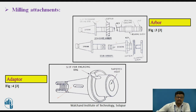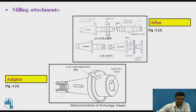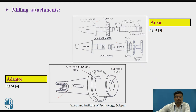Now for milling attachments: the first is the arbor, also called an adapter. The milling cutter — for example, an end mill cutter — is fixed in the tapered hole of the arbor, and the arbor is fixed into the spindle head. The engaging dog locks the cutter in place. A longer arbor with different types of collars allows mounting multiple milling cutters at once, enabling gang milling — performing different milling operations at one time.